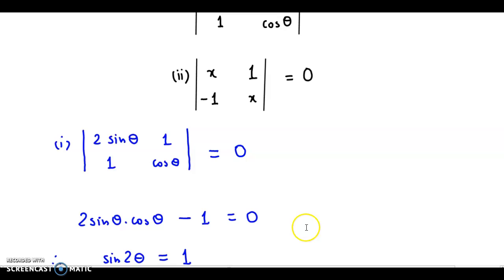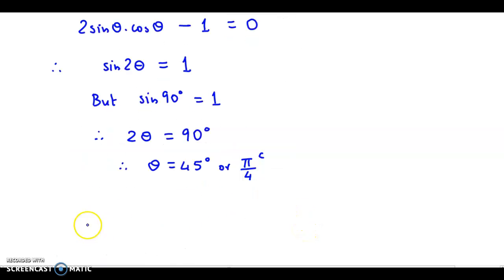Let's look at the second one: |x 1; -1 x|. So the second determinant is x, 1, -1, x is equal to 0.